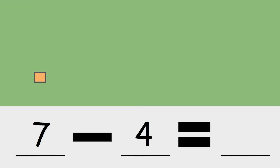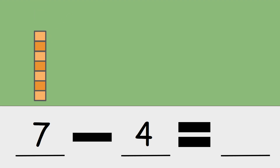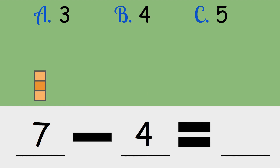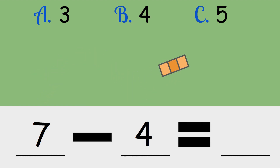Seven, take away four. Is the answer three, four, or five? Seven, take away four, is three.